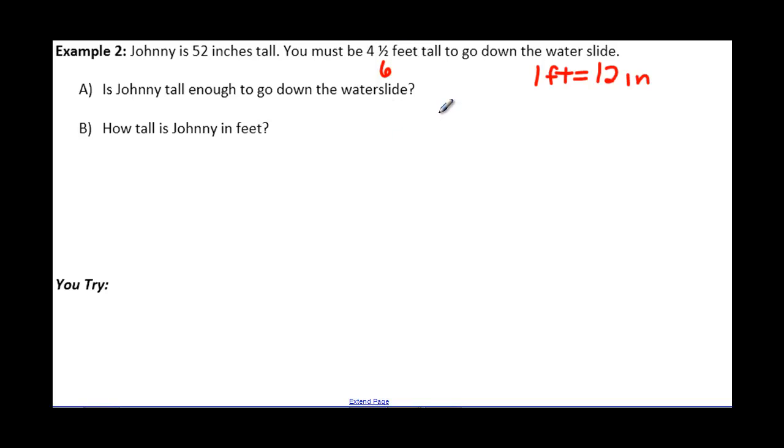So in order to do that, I'm going to take 52, I'm going to divide that by 12, and 52 divided by 12 will give me 4.3 repeating. I need to figure out what this .3 repeating is. So if I do 4 times 12, you should get 48.